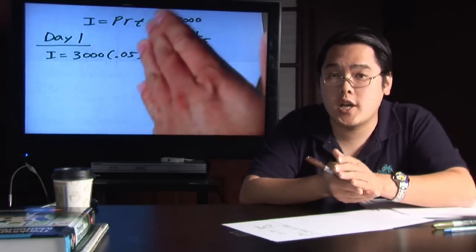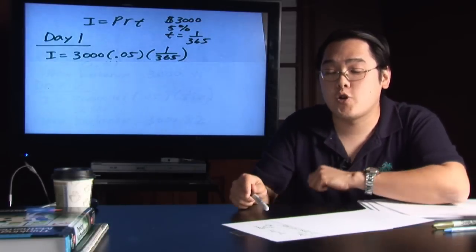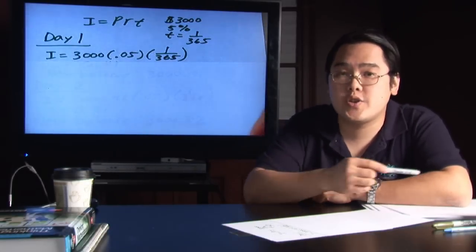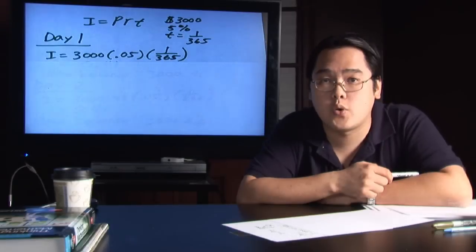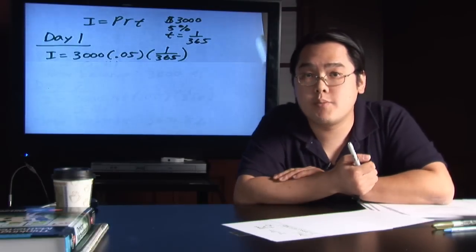Now because we are talking about day to day, daily, the T is going to be 1 over 365, where 365 of course is the number of days. And you'll be plugging in those numbers back in the simple interest formula.